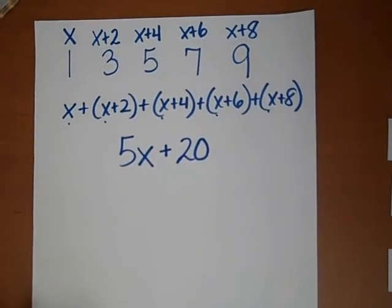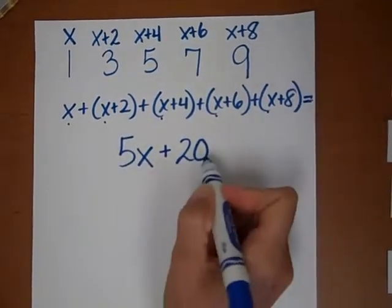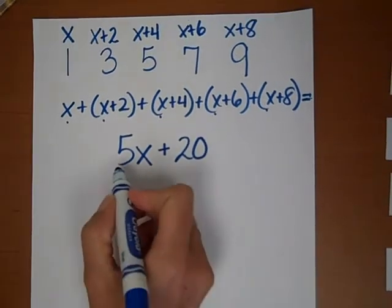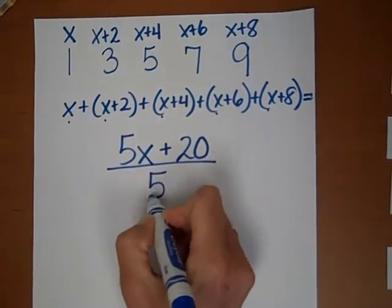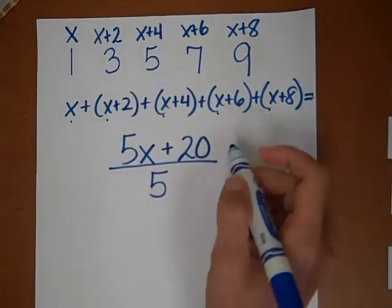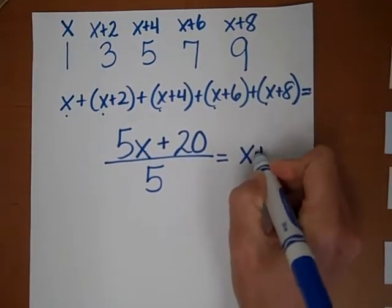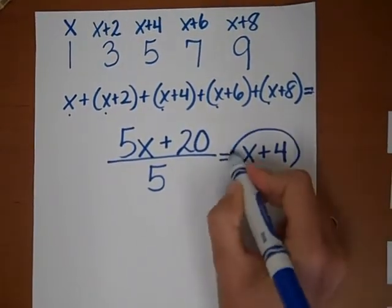Now notice if we divide our sum, this whole equation is equivalent to this, by 5. We know it will go in evenly because we can divide each term by 5 and get x plus 4.